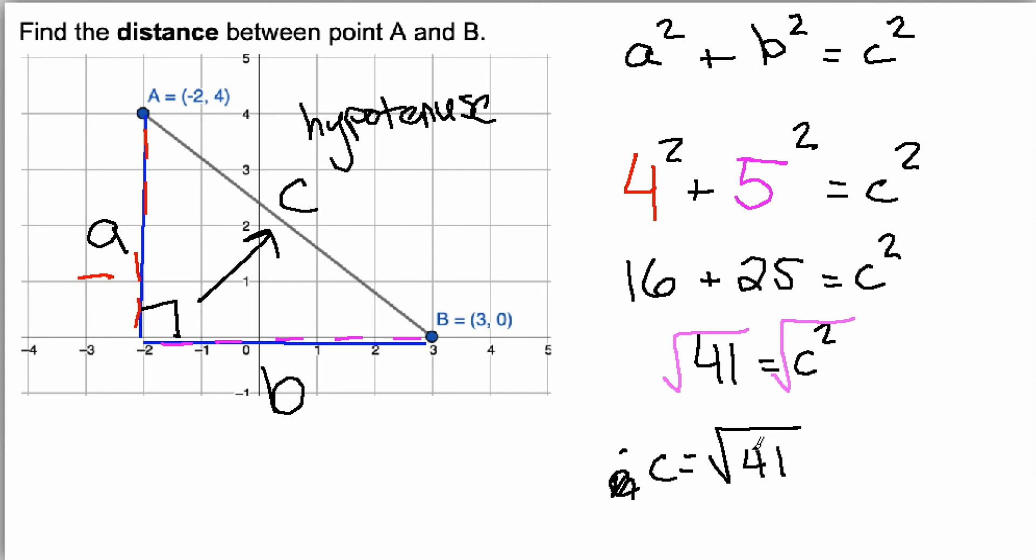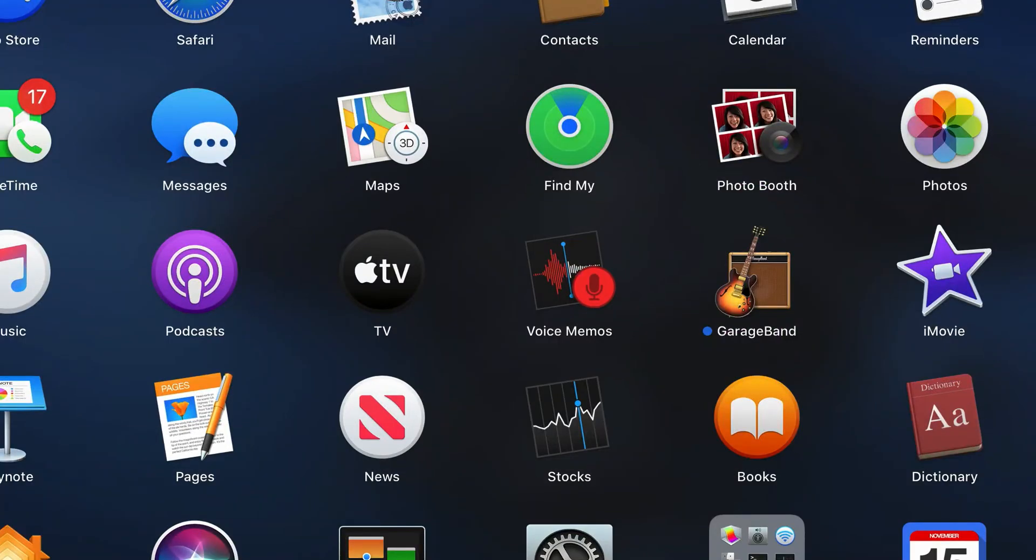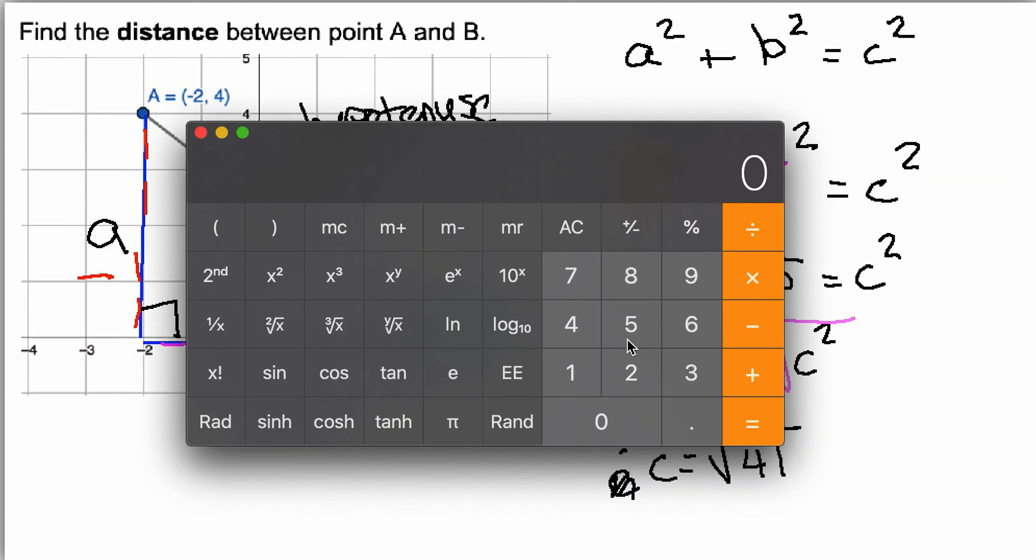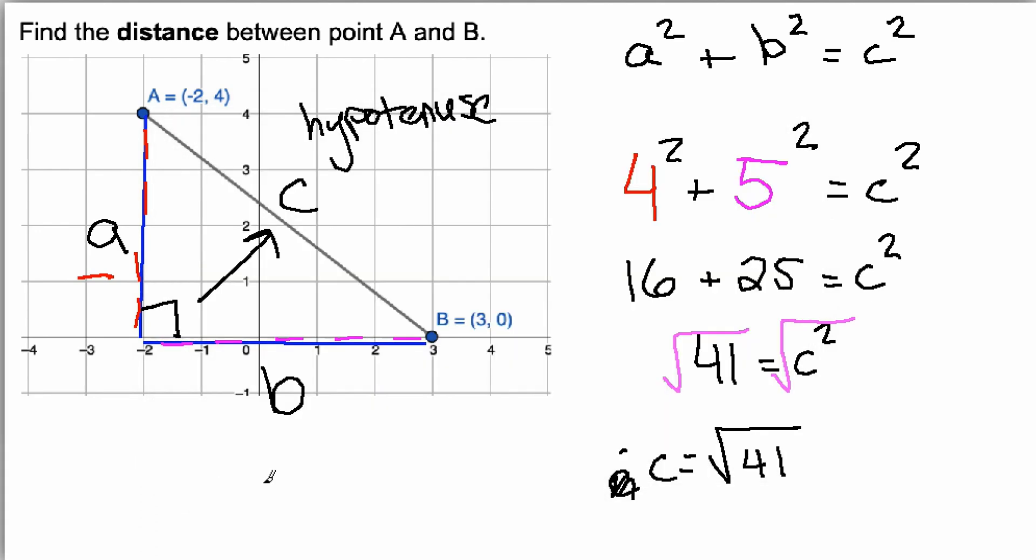Or, if I wanted to put that into my calculator, I could do 41, find this button right here, square root, and get 6.40. And that will be my final answer for C.